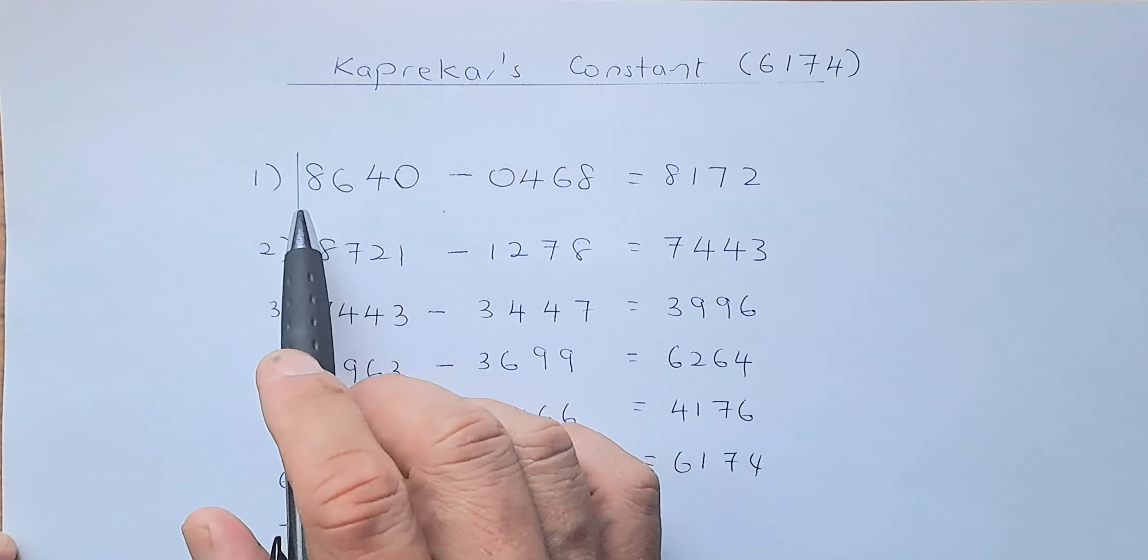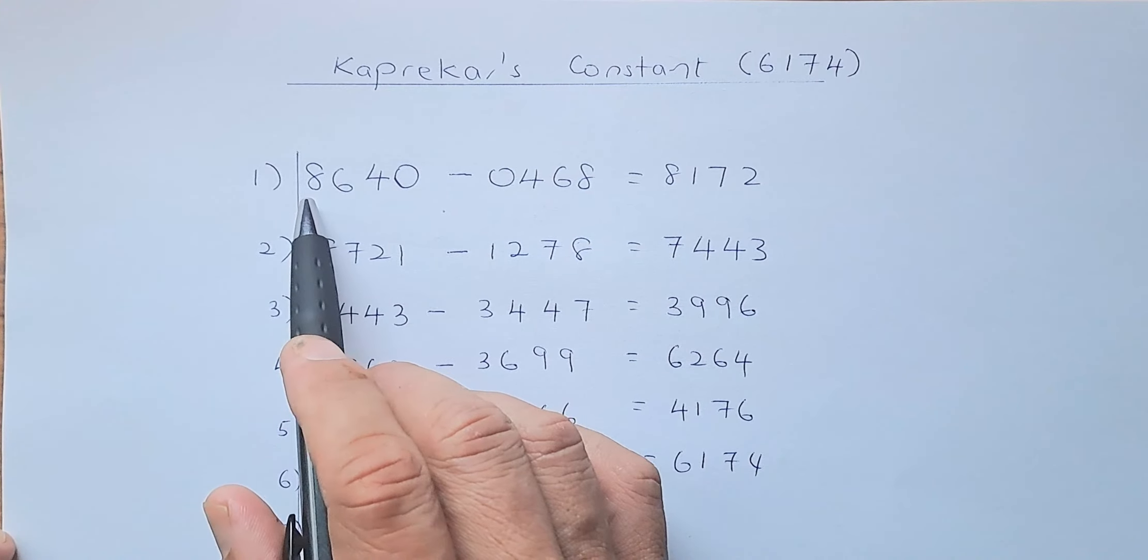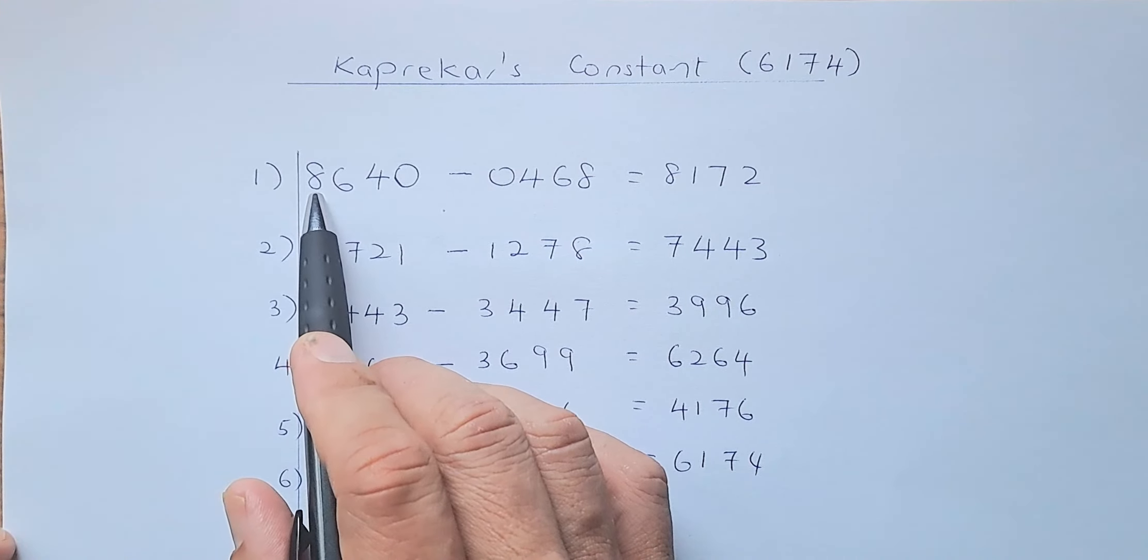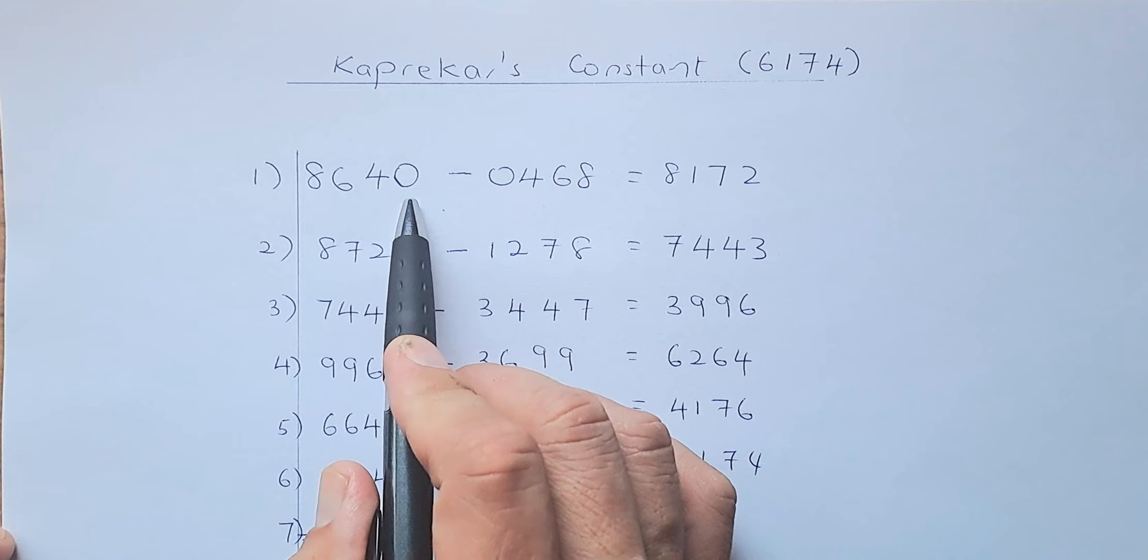First, we choose a number. We decide to choose a number such that it is in descending order, the biggest number followed by the smallest number at the end.